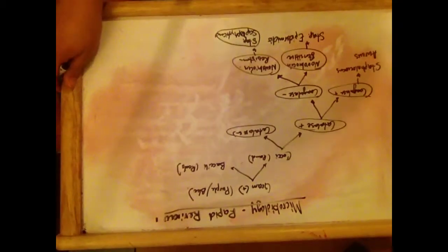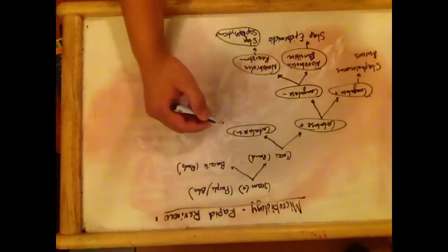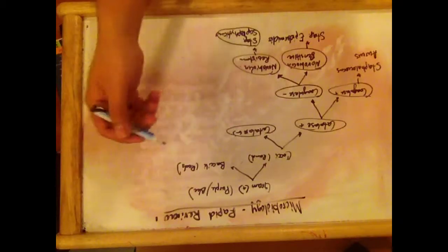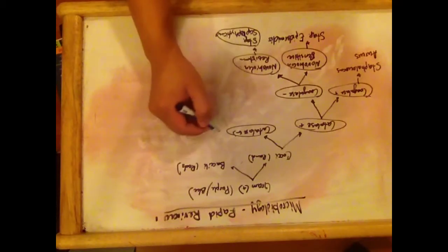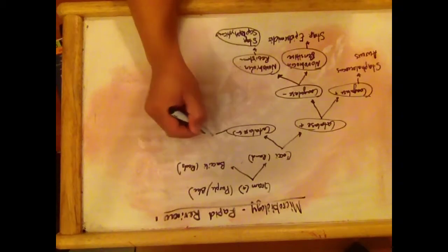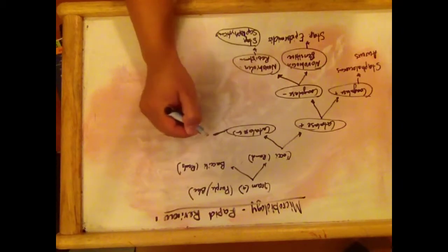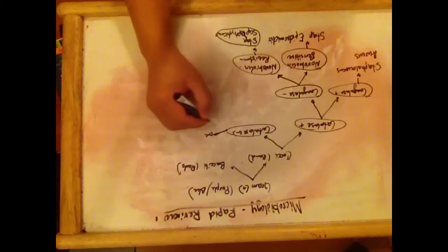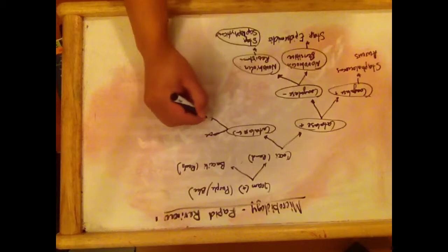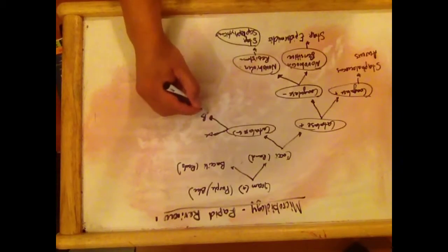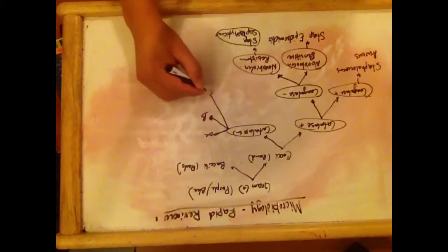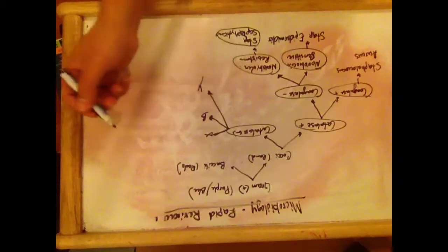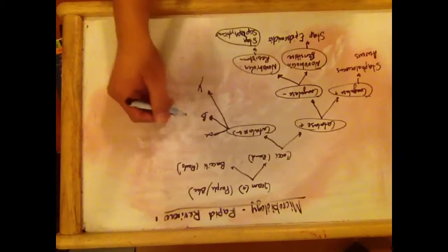With the coagulase-negative organisms covered, we know that it's going to be Streptococcus. The different types of Streptococcus are differentiated by whether they are alpha-hemolytic, which is partial hemolysis of the red blood cells, or beta-hemolytic, which is complete hemolysis, or gamma, which is no hemolysis at all.